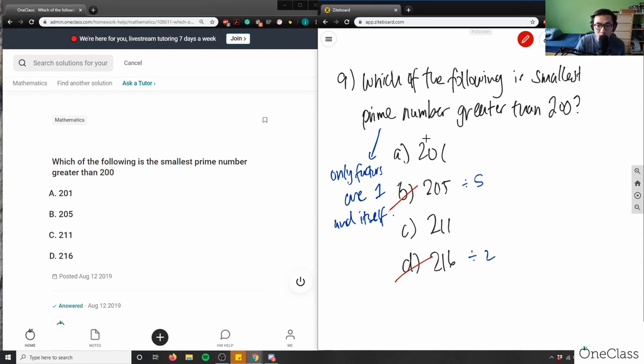For example, in 201, I have 2 plus 0 plus 1 equals 3. 3 is obviously divisible by 3, which means that I can divide 201 by 3. So 201 is indeed divisible by 3. And you can actually check with your calculator if it is.